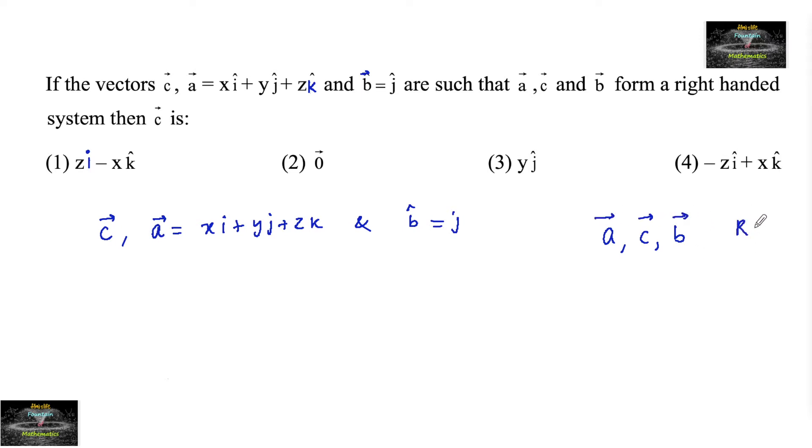It forms a right-handed system which implies that a cross c equals b, c cross b equals vector a, and b cross a equals vector c.